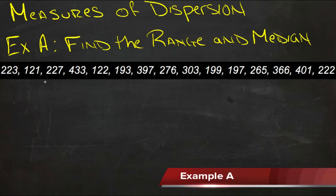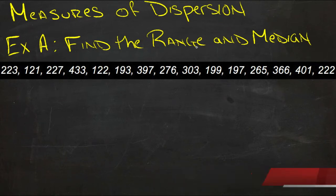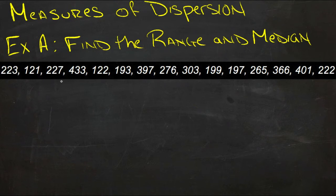So what we have here is just a list of numbers, and we're asked to find the range and the median of these numbers. The range is pretty easy — it's just what the lowest number is and what the highest number is and how many numbers are in between them. I'm going to go ahead and order them all because we need to order them to find the median anyway.